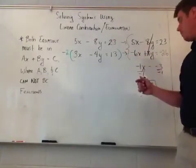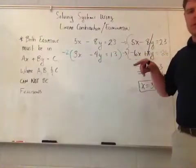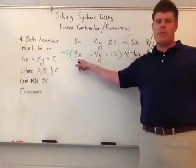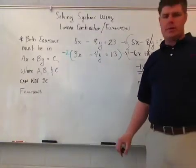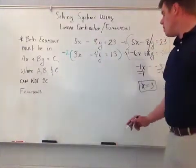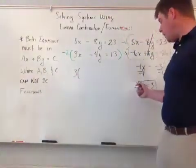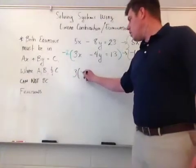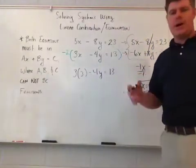I'm going to choose the second one here, 3x minus 4y equals 13. The reason I'm doing that is because I'd rather multiply by 3 than multiply by 5. That's my personal preference. You can do either one. It doesn't matter. So I come back here. I plug it in. Now I've got 3 times what the x was, was 3, minus 4y equals 13. And I just go ahead and solve it.